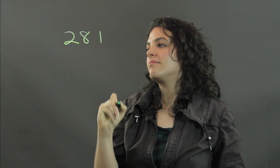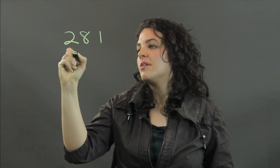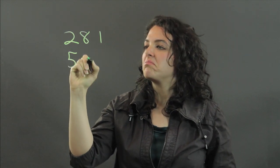Hi, my name's Julia, and I'm going to show you how to do the partial sums method with three digits. So we're adding three digit numbers. Let's do 281 plus 516.